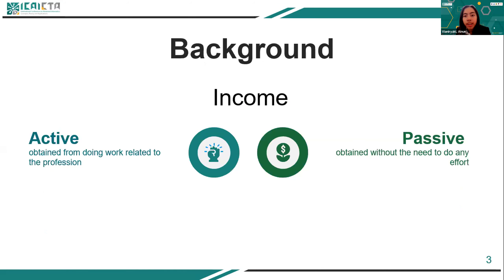So I'll start with the background. One of the human goals is to be able to meet the needs of life. And to meet the needs of life, humans will need to earn income. Income can be divided into two types, namely active income and passive income. Active income is obtained from doing work, while passive income is obtained without the need to do any effort.